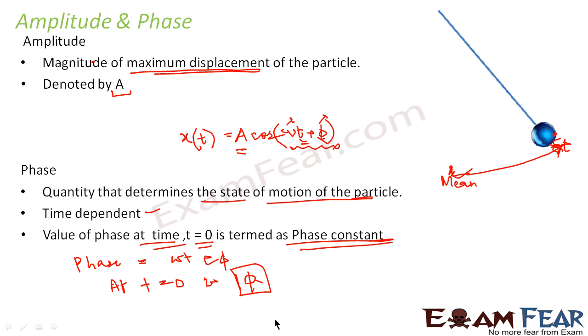Now just think of the derivation which we considered in the previous slide where we were plotting the graph for displacement with respect to time. At the start of it I told that let us consider phi is equal to 0.